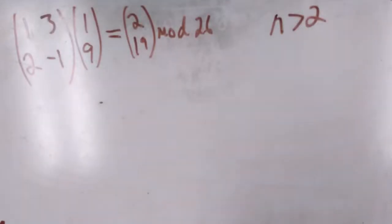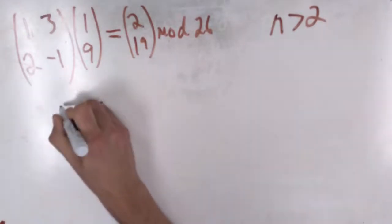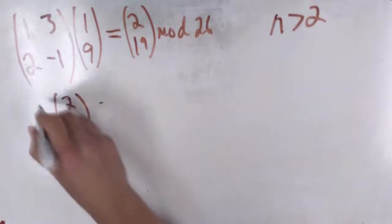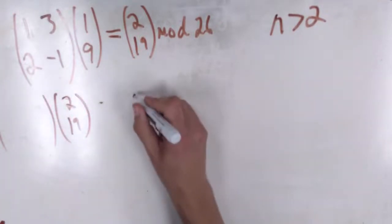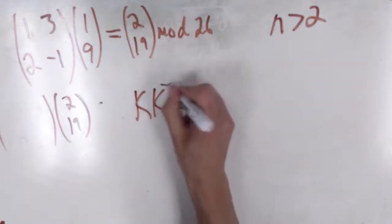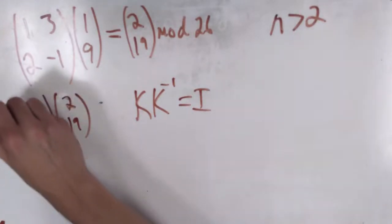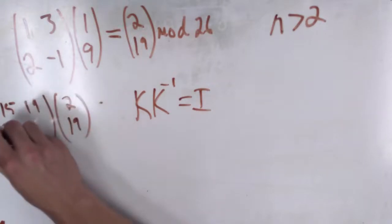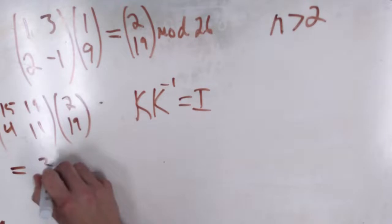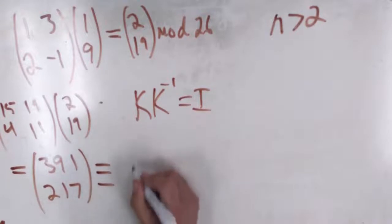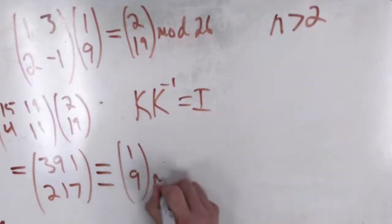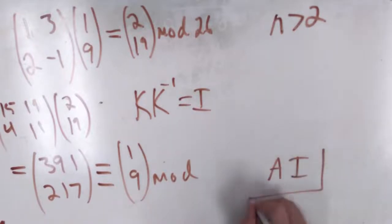To decrypt the message when you know the key, you simply multiply the encrypted message by the inverse of the key matrix. And so the inverse of the key matrix is the matrix that's multiplied by the original key matrix will give you the identity matrix. However, you have to be careful because the modular inverse matrix will be different than when you normally find the inverse of the matrix. In our case, the inverse is 15, 19, 4, and 11, which multiplied out gives 391 and 217. Mod 26, this is equivalent to 1 and 9. And as you see, we have got back our original message about artificial intelligence.